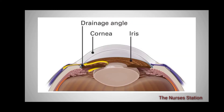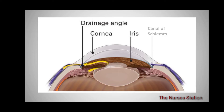Looking at the anterior portion of the eye, there is the cornea, the iris, and the drainage angle — which is the angle between the cornea and the iris. Located in the drainage angle is the trabecular meshwork. There is also the canal of Schlemm, through which the aqueous humor drains and passes into the episcleral vein.